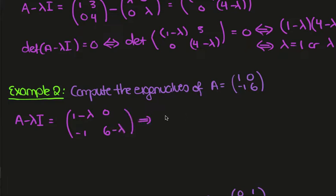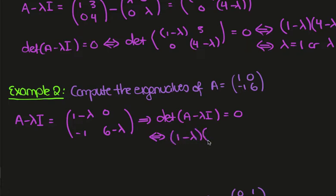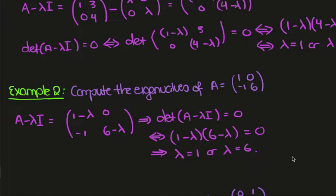If we take the determinant of this matrix, so det(A minus lambda I) equals 0, that'll be true if and only if we take the determinant here. We'll have (1 minus lambda)(6 minus lambda) equals 0, and so lambda equals 1 or lambda equals 6.